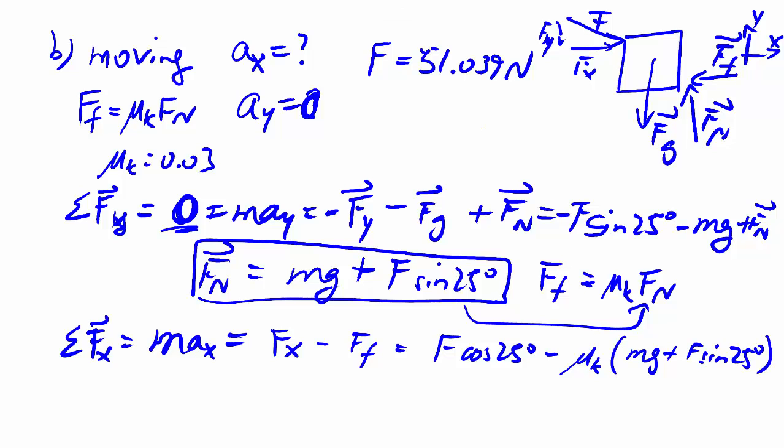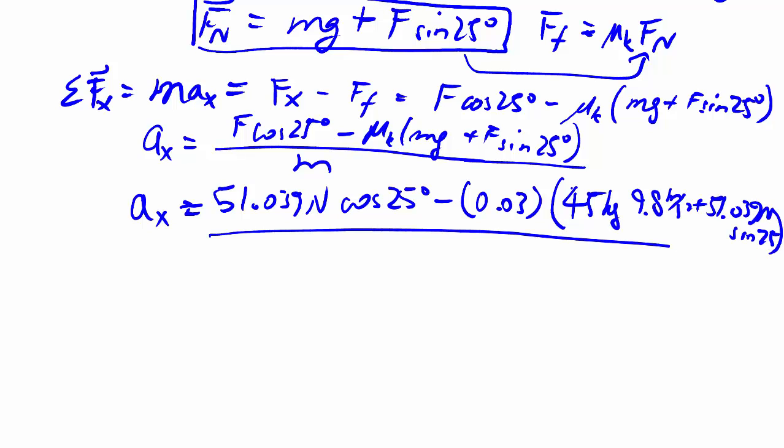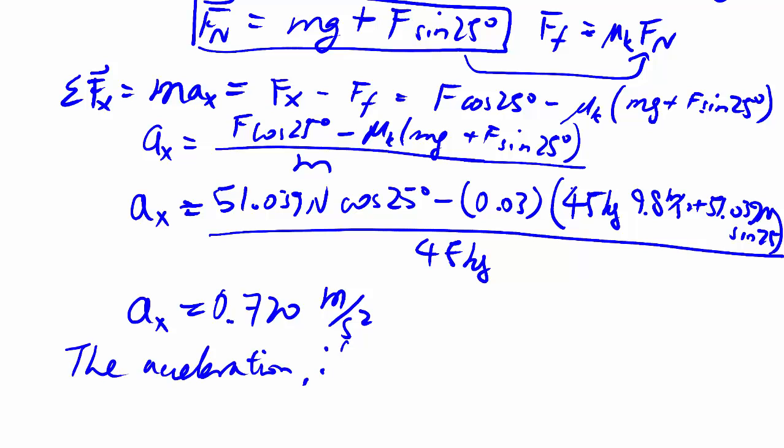In this case, we're looking for AX, so we divide everything by M. F, we know from the last part, mu K we talked about, all divided by 45 kilograms. So, newtons divided by kilograms, you get meters per second squared. The calculator gives the answer 0.720. So, the acceleration, if the force is maintained, is 0.720 meters per second squared to the right.